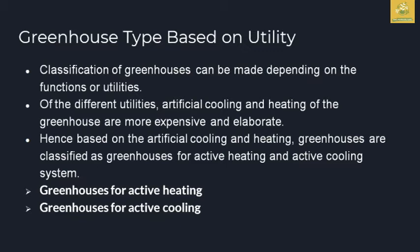Next is classification based on utility. You can use active heating and cooling. You can use overcooling systems, active heating, and active cooling. Using both active heating and cooling is expensive. If you have technical knowledge, you can use this type of greenhouse.